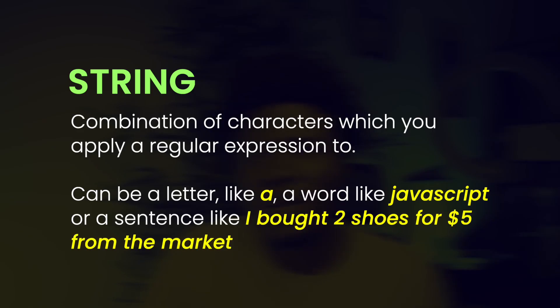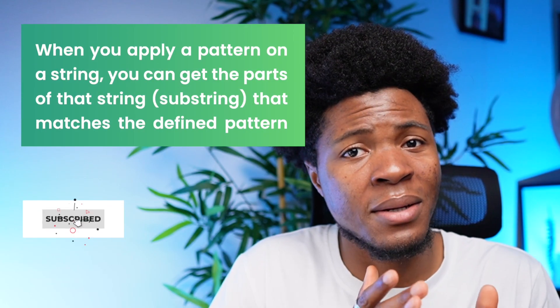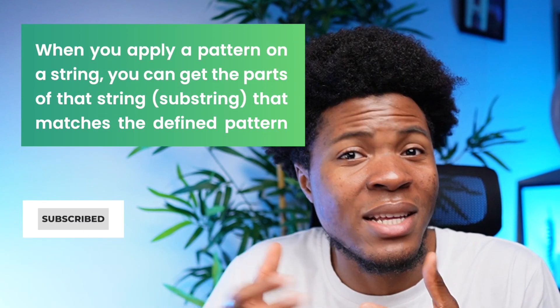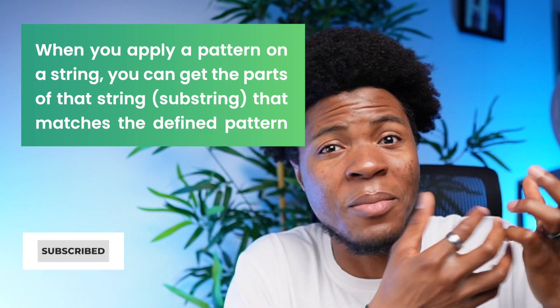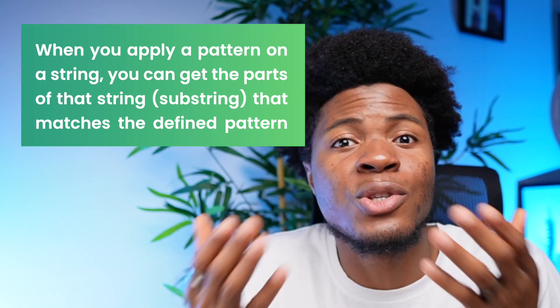The first term we're looking at is string. A string is a combination of characters which you apply a regular expression to. A string can be a letter like A, or a word like JavaScript, or even a sentence like 'I bought two shoes for $5 from the market.' When you apply a pattern on a string, you can get the parts of that string that match the pattern, and those parts can also be called substrings.